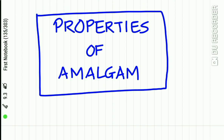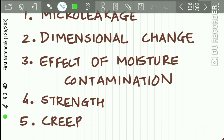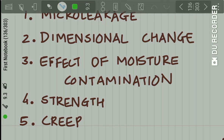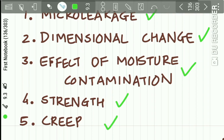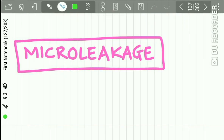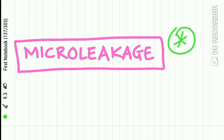Now let us study the properties of amalgam. Dental amalgam is unique in some properties, and because of these unique properties it differs from other alloys. Certain important properties to study are: first, micro leakage; then dimensional change; the effect of moisture contamination; strength; and lastly, creep. Micro leakage is a very important topic asked frequently in exams.